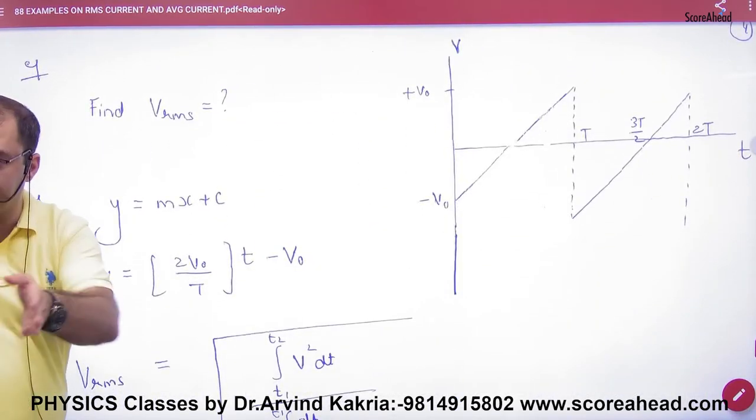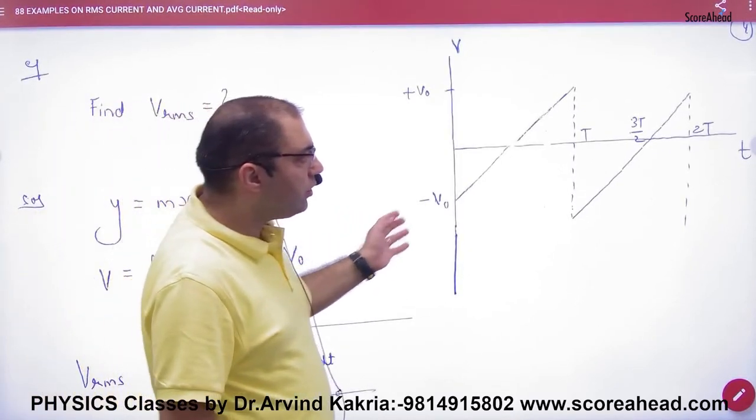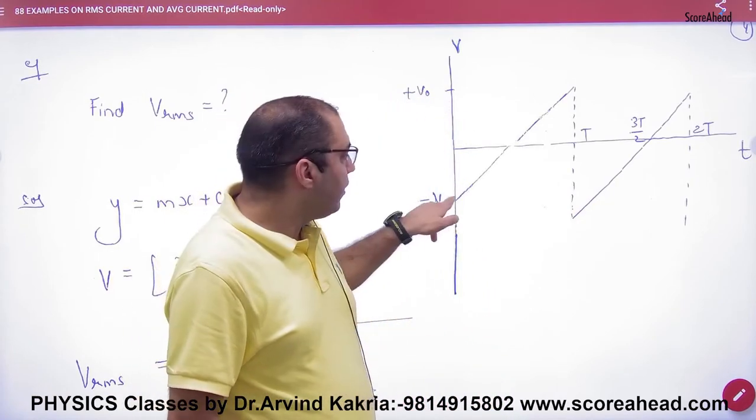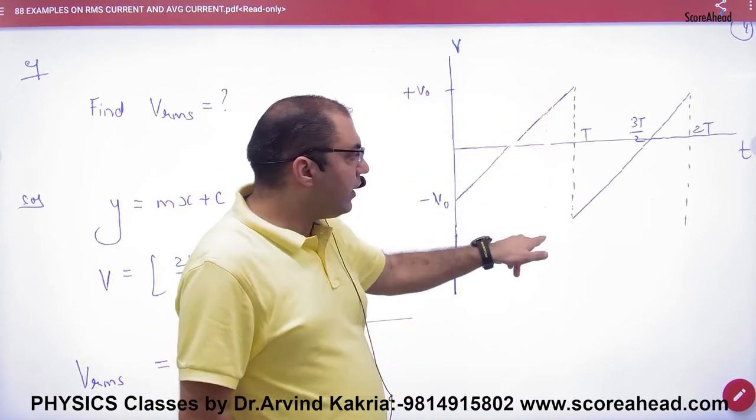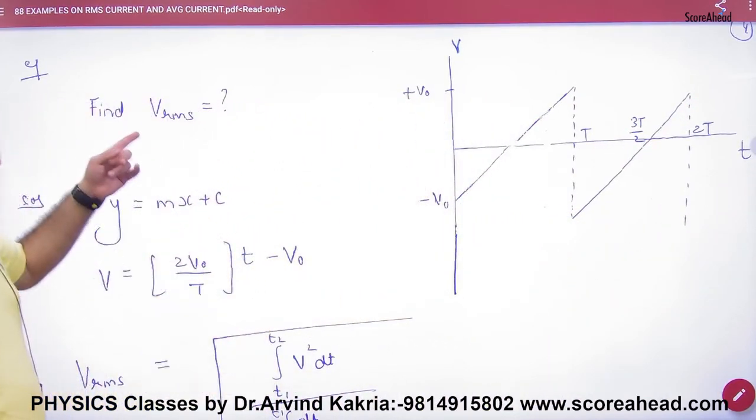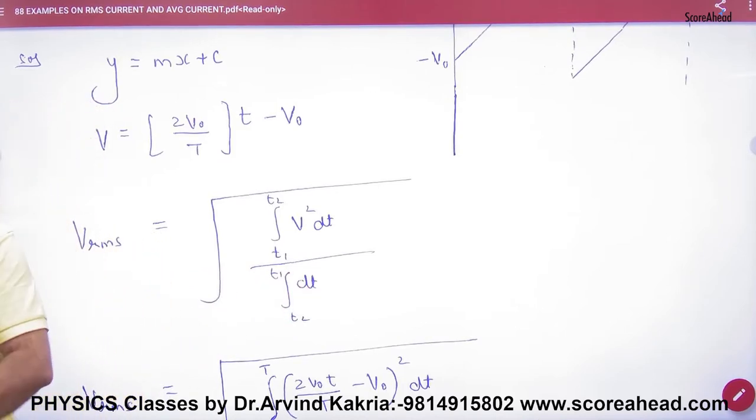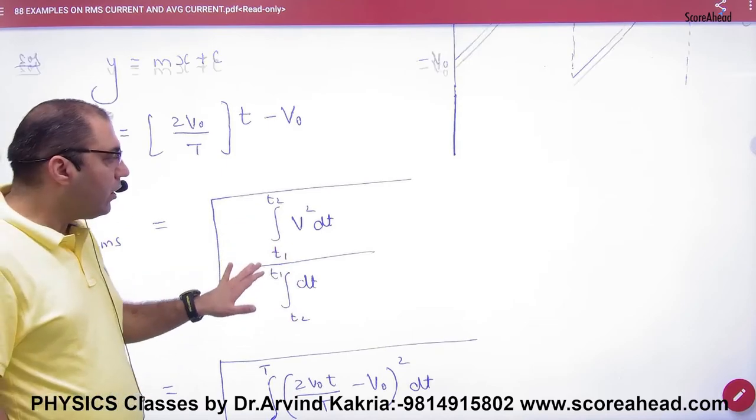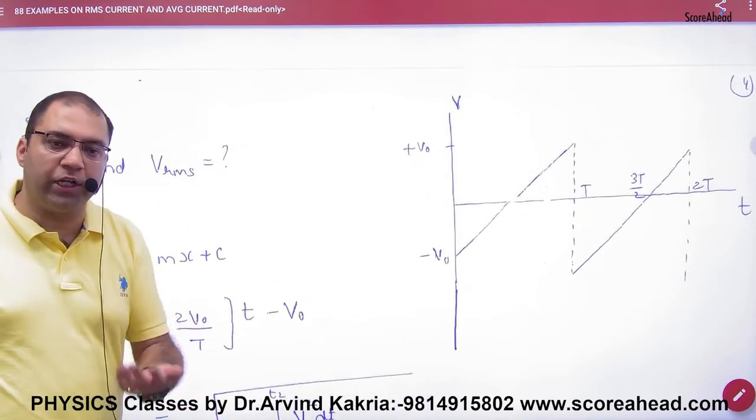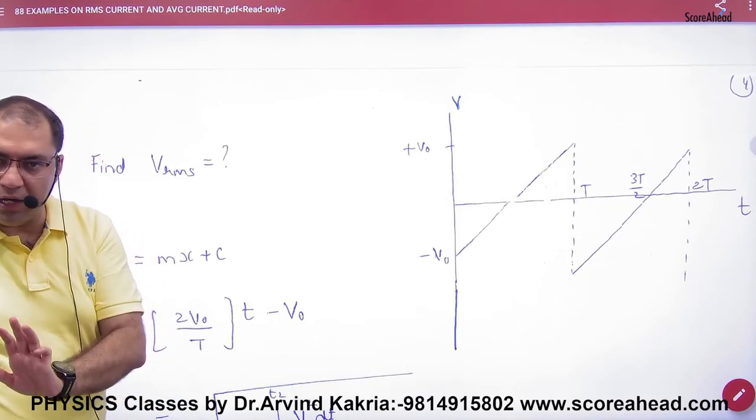This question is not for medical, only non-medical. In this voltage and time graph with repeating pattern, you have to find RMS value of voltage. Formula is √(∫V²dt / ∫dt). If you tell me V as a function of time, then my answer will come out.